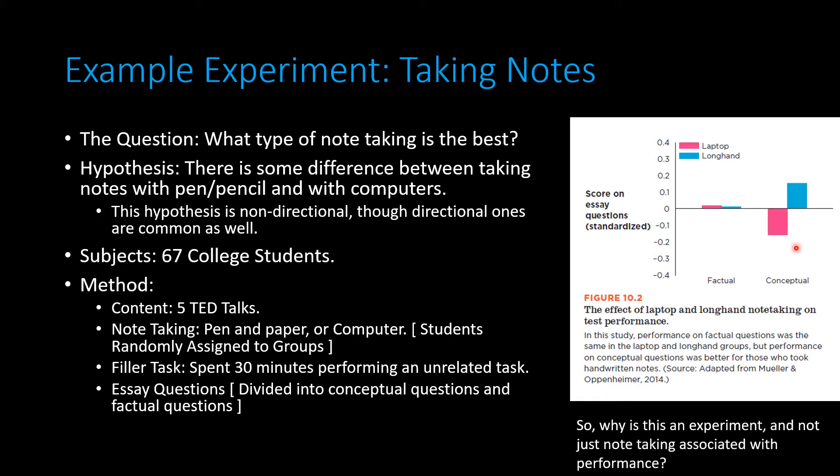So why is this an experiment and not just some type of association between note-taking and performance? The primary reason is that students were randomly assigned to these groups. You manipulated what type of note-taking they did, and therefore you're able to infer that it is your manipulation that led to these differences.